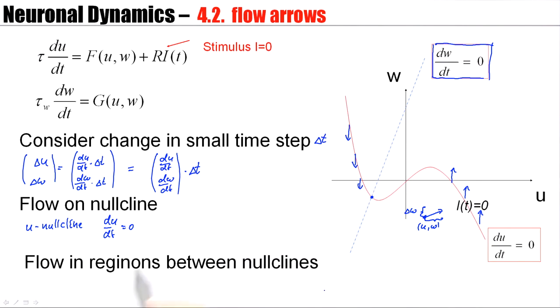Similarly, on the w nullcline, I know that dw/dt is zero. If dw/dt is zero, then there is no change in the direction of w possible. Delta w is zero. And that means the direction of flow must be horizontal, either leftward or rightward pointing. Now, how do I know whether the arrows point towards the left or towards the right?